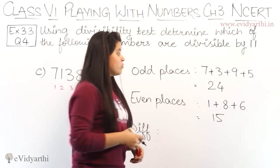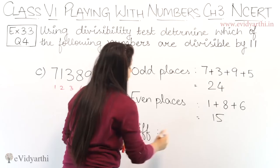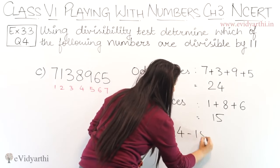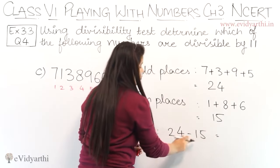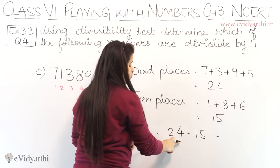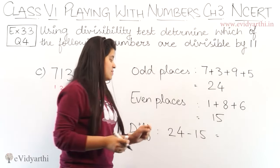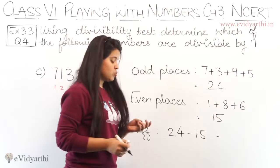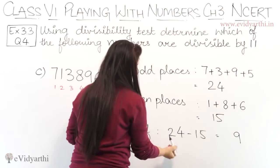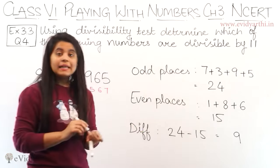So, we have 24 and 15. Now we find the difference: 24 minus 15. This gives us 9. So, my difference is 9.